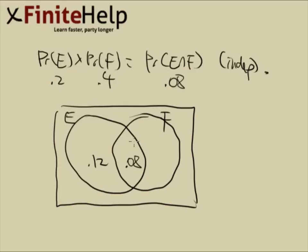F is 0.4, so that leaves 0.32 in this area. The union is everything added together, so E union F is 0.12 plus 0.08 plus 0.32, which equals 0.52.